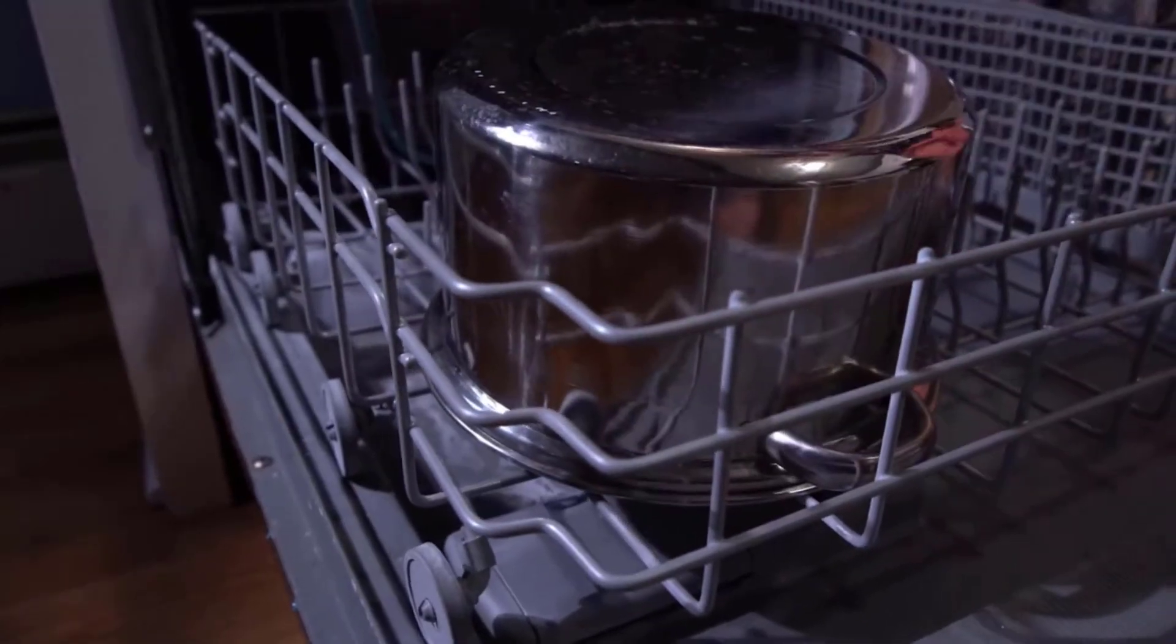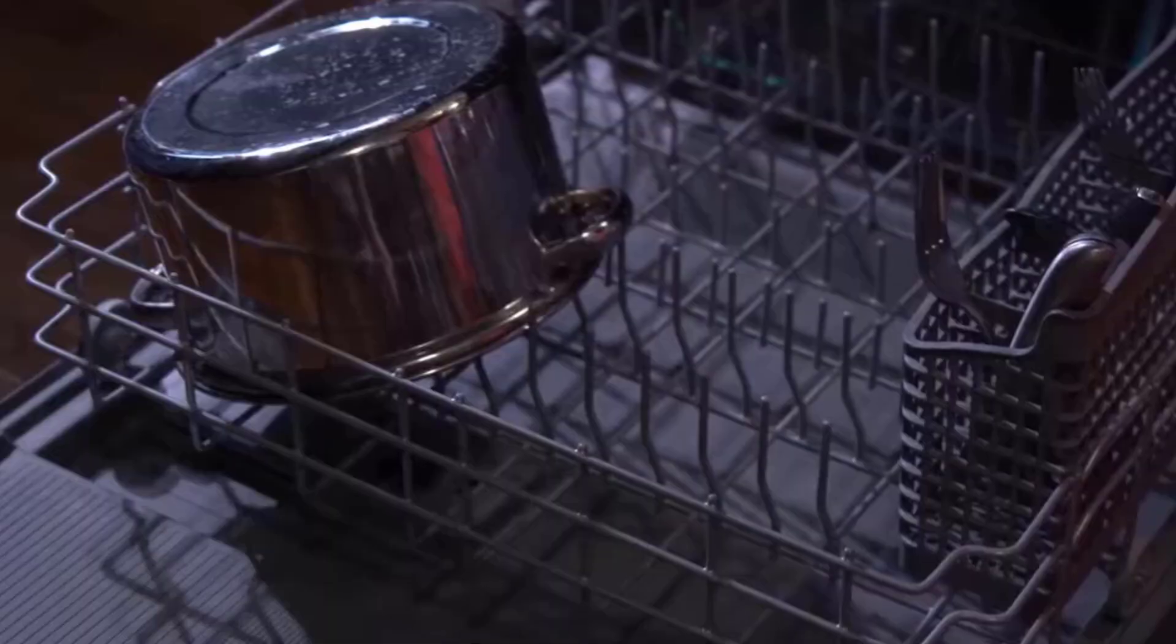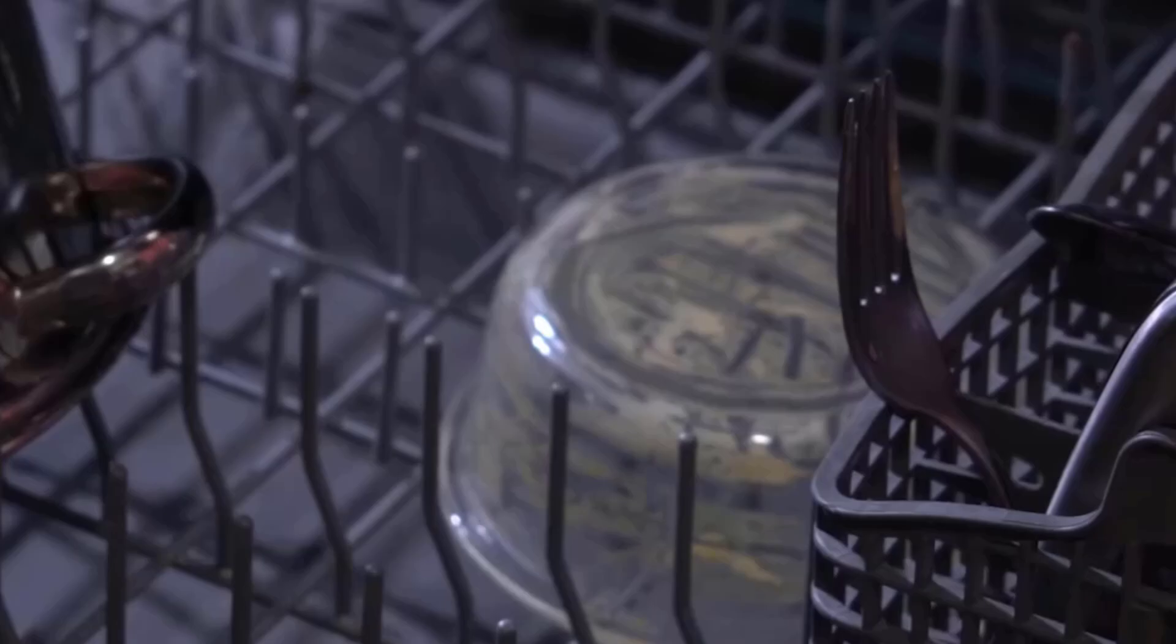Dishwasher-safe pots and pans can go on the bottom rack as well, but avoid running these in the same load with fragile china. Place items with baked-on food face down toward the lower spray arm.